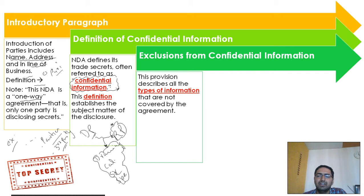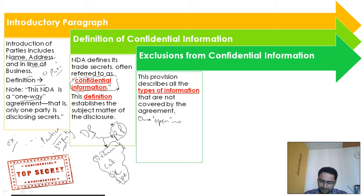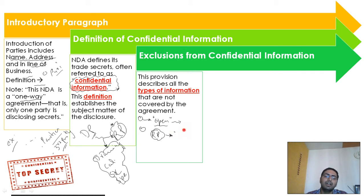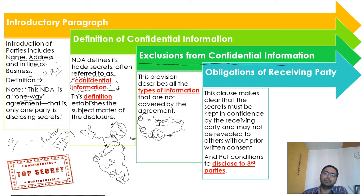The third clause deals with exclusions from confidential information. This clause addresses situations where certain details are readily available in open source or publicly available on the internet. There may also be cases where the receiving party themselves already possesses a particular document or drawing that they developed before the signing of the NDA. All such specific points are captured under the exclusions of confidential information.